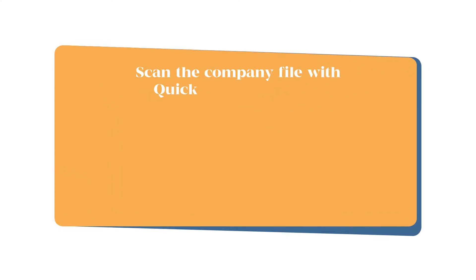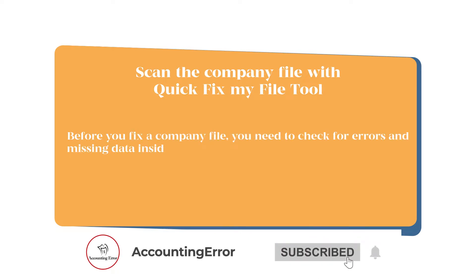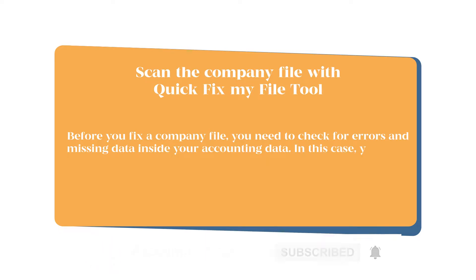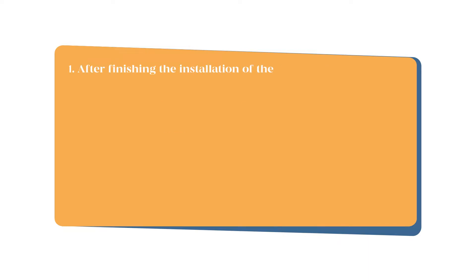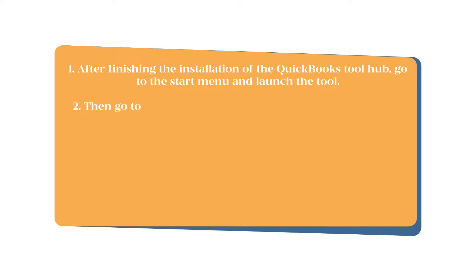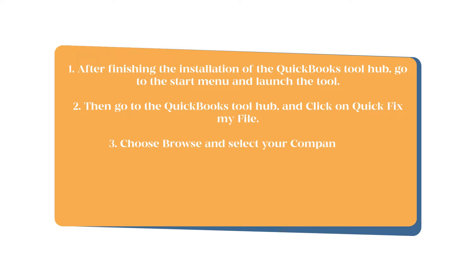Now, scan the company file with the Quick Fix My File tool. Before you fix a company file, you need to check for errors and missing data inside your accounting data. You need the Quick Fix My File program to quickly and easily work through this issue. After finishing the installation of QuickBooks Tool Hub, go to the Start menu and launch the tool. Then go to QuickBooks Tool Hub and click on Quick Fix My File. Choose Browse, select your company file, and wait for the scan to finish.